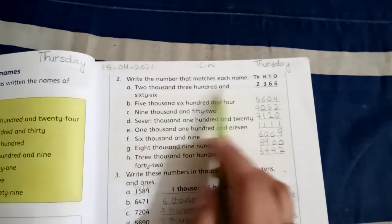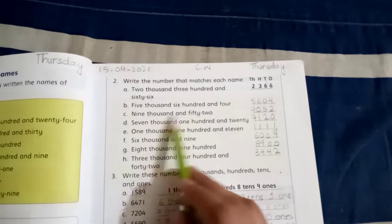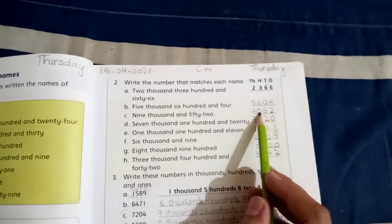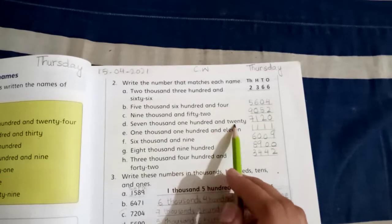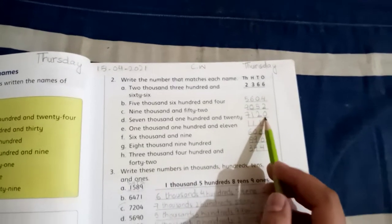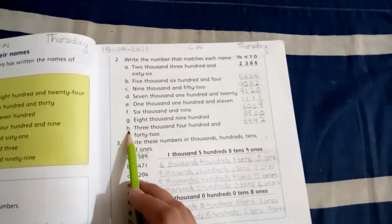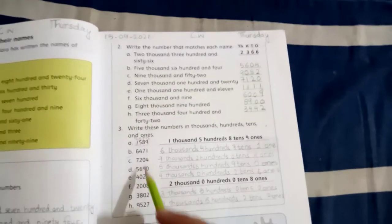Two thousand three hundred sixty-six: 2,366. Five thousand six hundred four: 5,604. Nine thousand fifty-two: 9,052. Seven thousand one hundred twenty: 7,120. The remaining E through H parts you will do. Next question three.